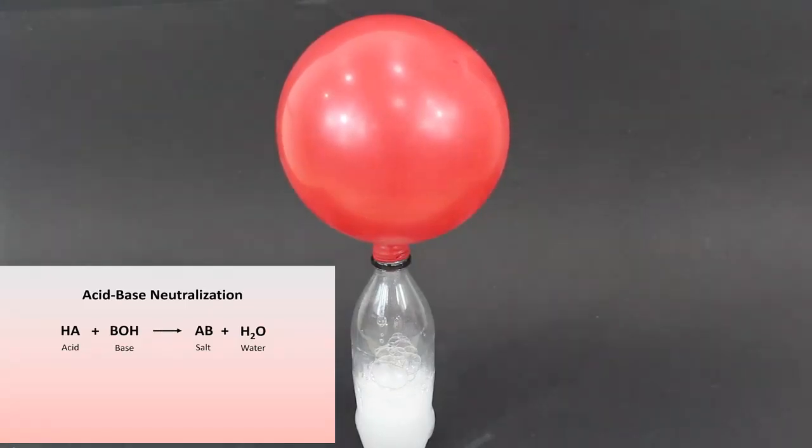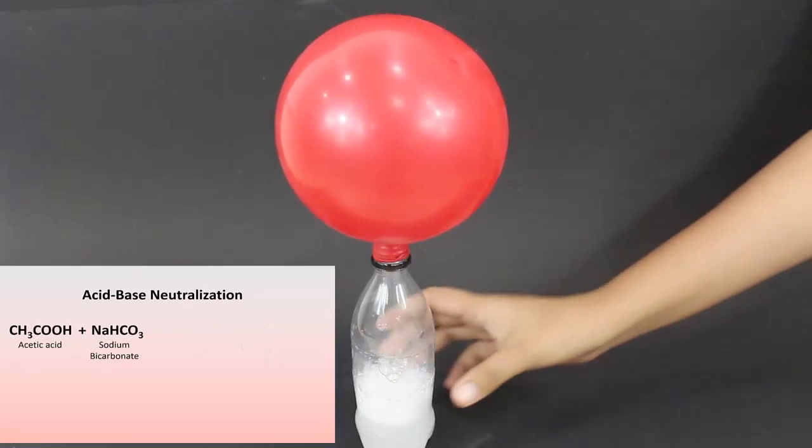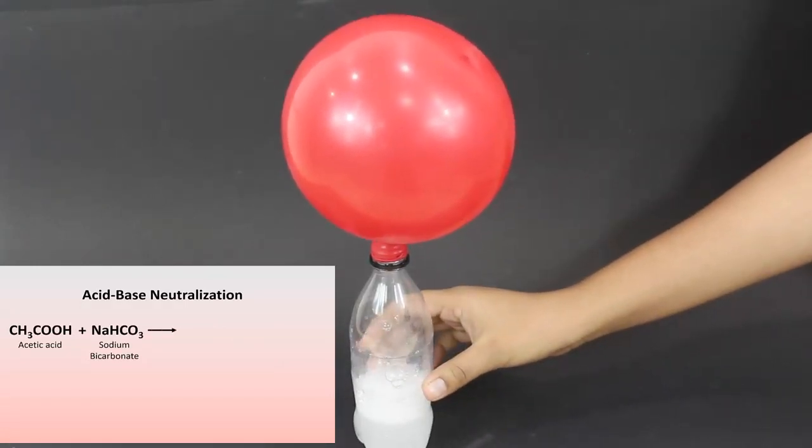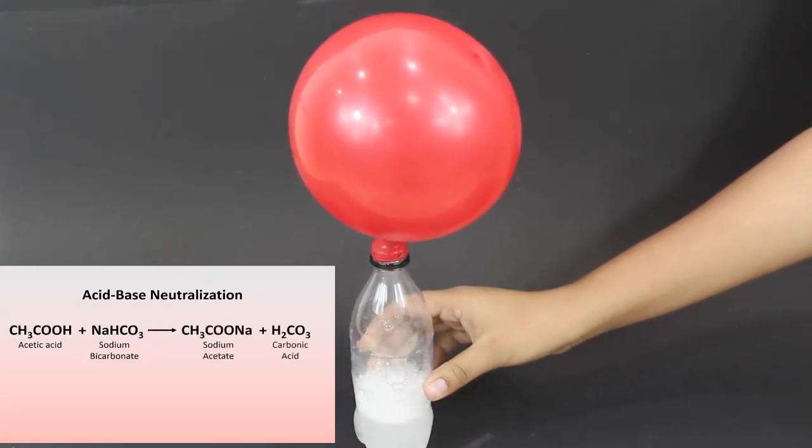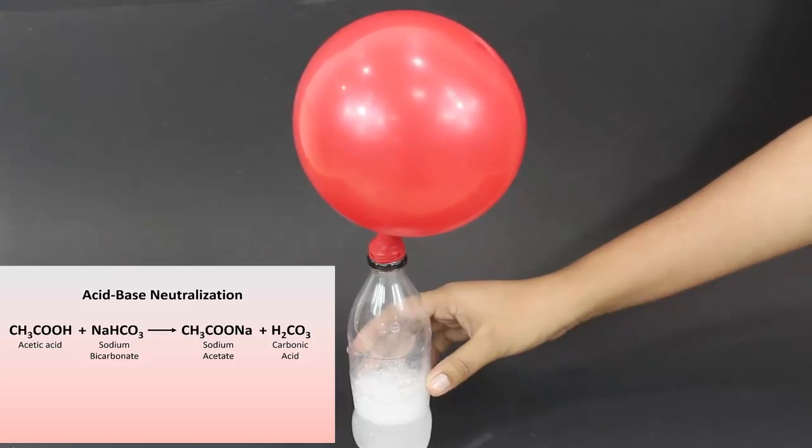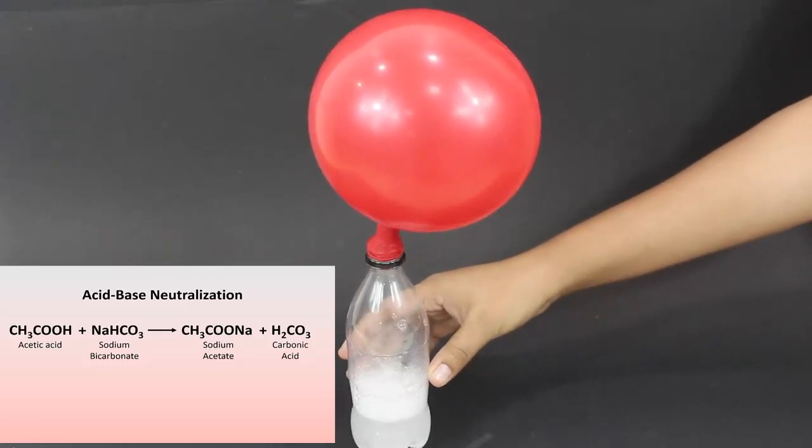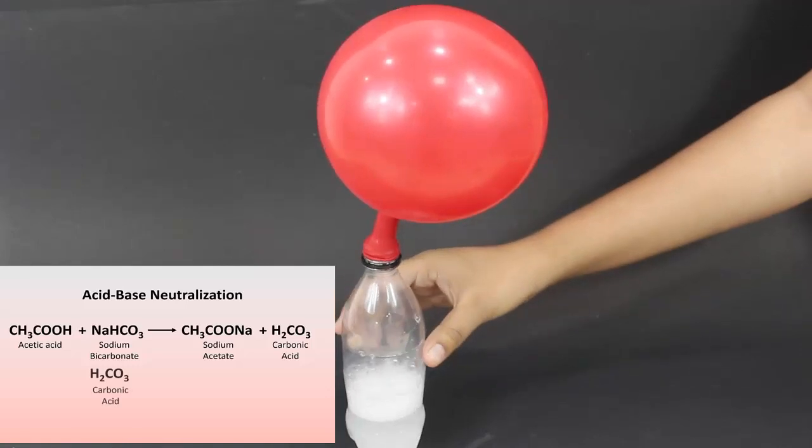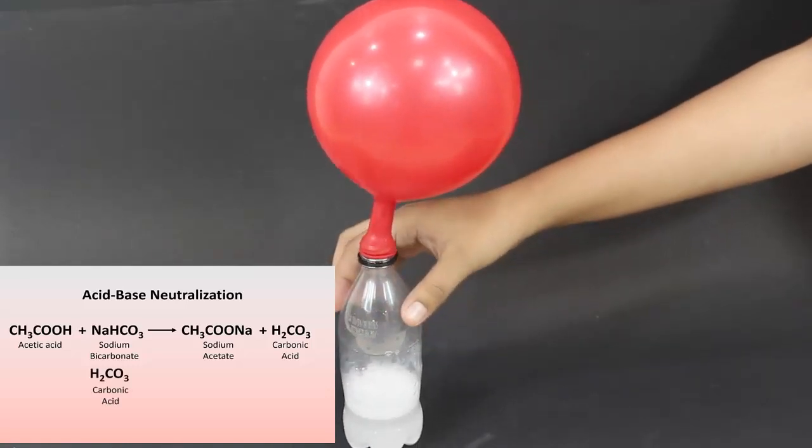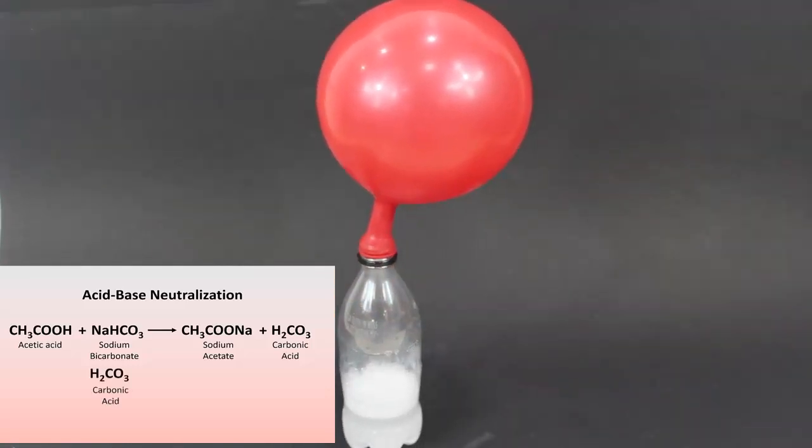But in this reaction there is another bi-product which is a gas. Mixing of acetic acid and sodium bicarbonate produces sodium acetate and carbonic acid. Carbonic acid is made when carbon dioxide reacts with water. Thus carbon dioxide gas is produced when the unstable carbonic acid splits into its components that is water and CO2 which inflates the balloon.